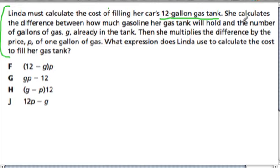In this problem, let's read through it. She calculates the difference between how much gasoline her gas tank will hold and the number of gallons of gas, G, already in the tank. Let's just write down that gas is represented by the variable G. And she has a 12-gallon tank.